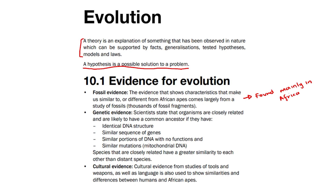The second one is genetic evidence, where scientists state that organisms are closely related and are likely to have a common ancestor if they have identical DNA structures, similar sequences of genes, similar portions of DNA with no functions, and similar mutations — which can be seen in mitochondrial DNA. Species that are closely related have a greater similarity to each other than distant species, and we can observe this through phylogenetic trees, as these show the evolution of species.